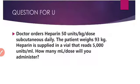Now it's your turn. The doctor orders heparin 50 units per kg per dose subcutaneous daily. The patient weight is 93 kg. Heparin is supplied in a vial that reads 5,000 units per ml. How many ml per dose will you administer? Note that you do not need to convert the weight since it is already given in kg. The desired amount is 50 units per kg and the amount on hand is 5,000 units per ml. Calculate this and put your answer in the comment box.